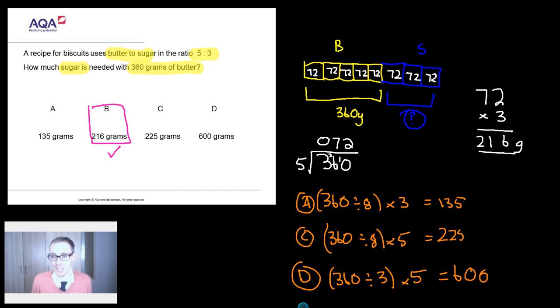All of which brings me to my final thing. Now, often I say to you, how might they have got this other wrong answer? And I come up with another one. But instead, I'm going to set you a challenge. Can you rewrite the question so that 135 grams is actually the right answer? And then can you rewrite the question so 225's right? And then can you rewrite the question so 600's right? Because that'll really get you thinking about the essence of ratio and really put your understanding to the test.